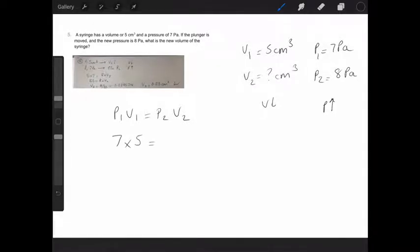The pressure P2 is eight. The volume V2 is what I am trying to find out. Seven times five is 35. But with all the mistakes I'm making, I think it's probably best that I just check that on a calculator. That's 35. So eight times V2 is carried down.